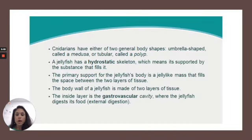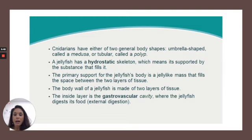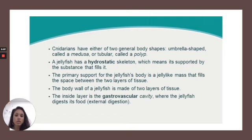Cnidarians have either of two general body shapes: umbrella-shaped, called a medusa, or tubular, called a polyp. A jellyfish has a hydrostatic skeleton, which means it's supported by the substance that fills it. The primary support for the jellyfish's body is a jelly-like mass that fills the space between the two layers of tissue.